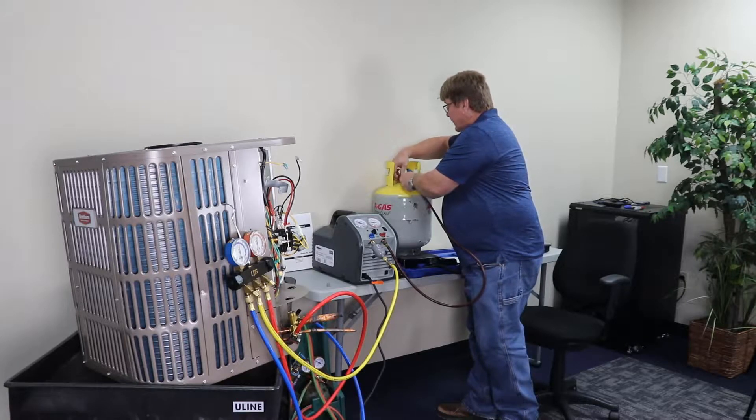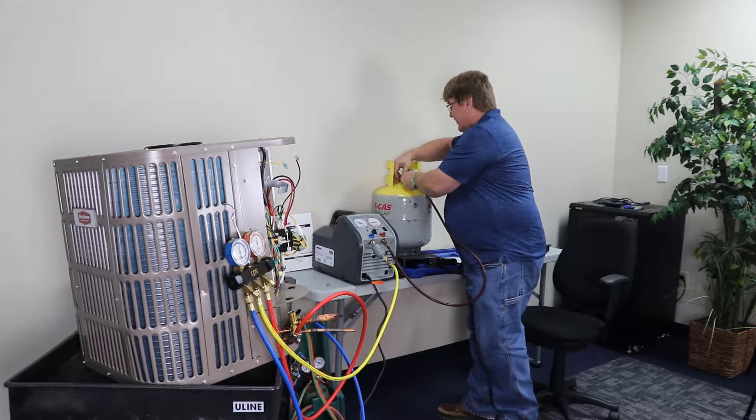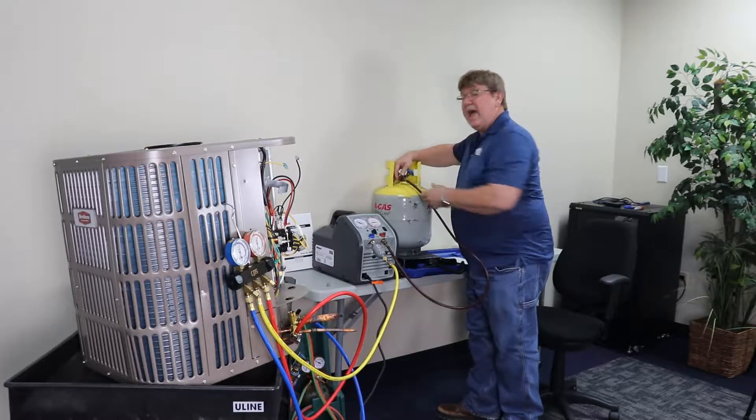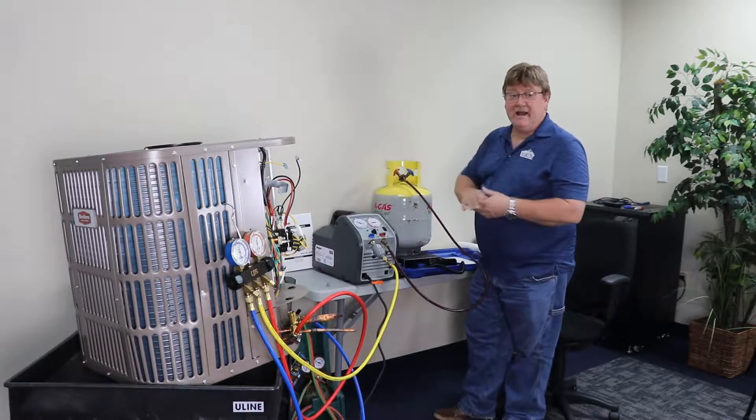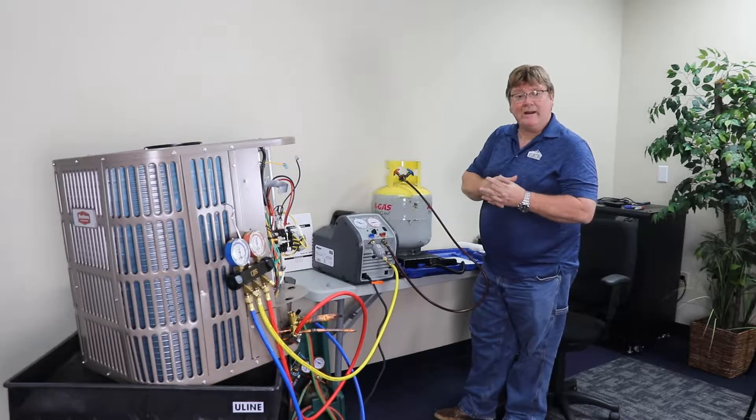Also really good for when you're doing refrigerant recovery now on all equipment containing five to fifty pounds of refrigerant. You have to track that: how much you're pulling out of the system, how much you're keeping, how much you're reusing, and how much you're sending off for reclamation.